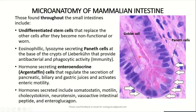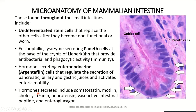Apart from these cell types, we also have hormone-secreting cells called argentaffin cells or enteroendocrine cells, which regulate the secretions of the pancreas, liver, and gastric juices, along with regulating motility in the intestine. The hormones secreted by these argentaffin cells include somatostatin, motilin, cholecystokinin, neurotensin, vasoactive intestinal peptide, and enteroglucagon.